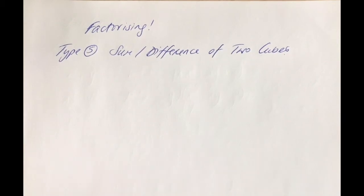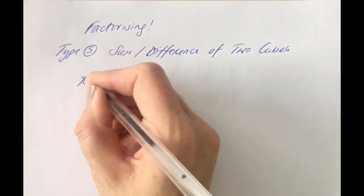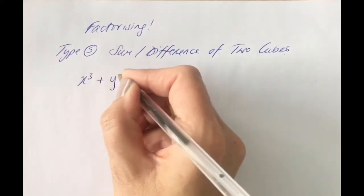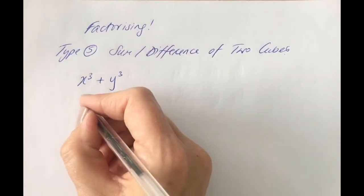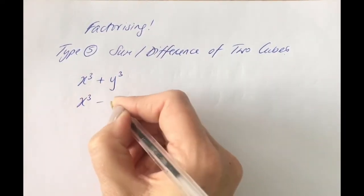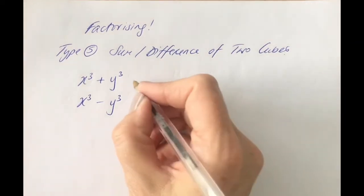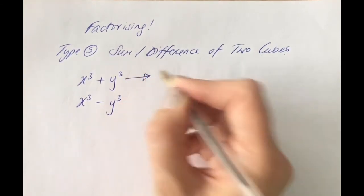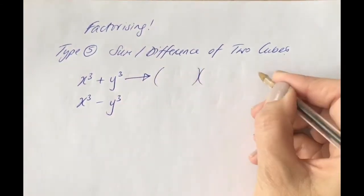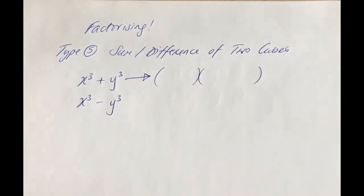So let's say you have something like x cubed plus y cubed, or you have x cubed minus y cubed. Unfortunately we don't have a particular four-step method here for this — you're going to have to just remember how to factorise this type. If you have the sum of two cubes, you have two sets of brackets, and the second one is longer than the first.